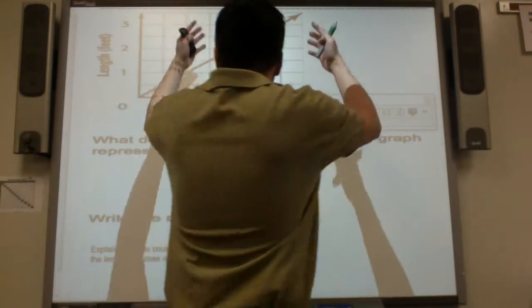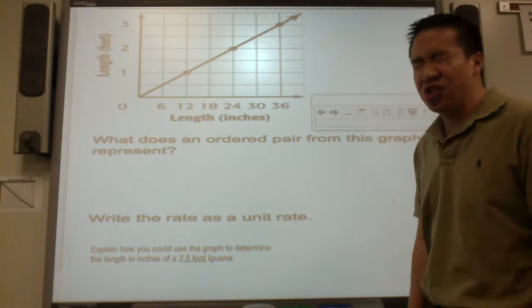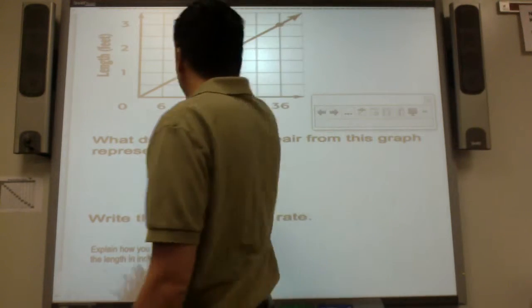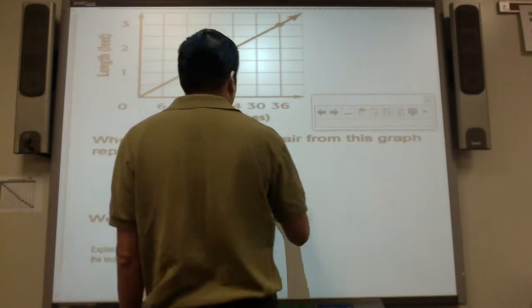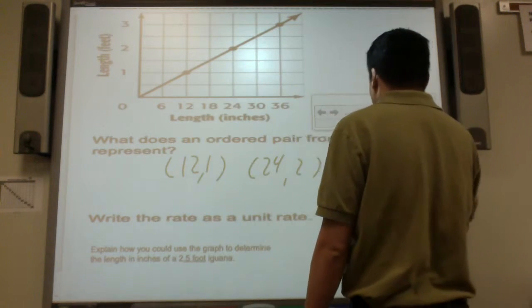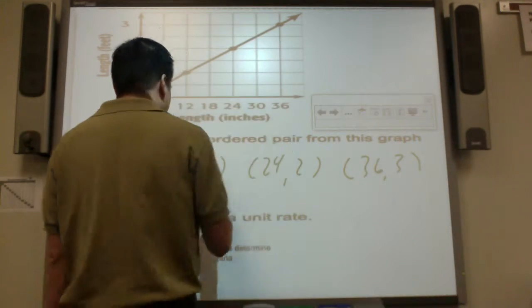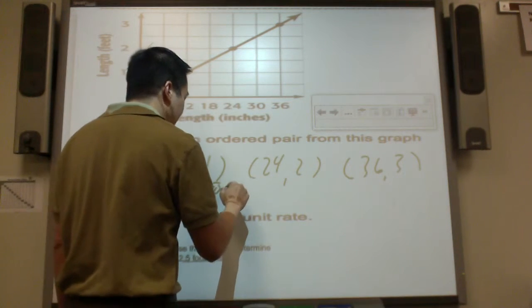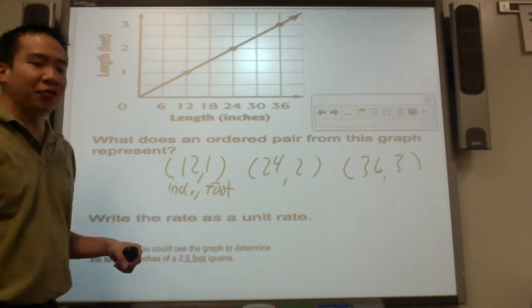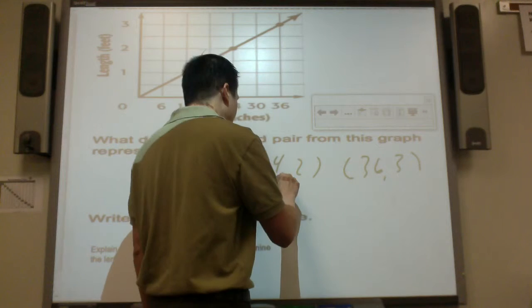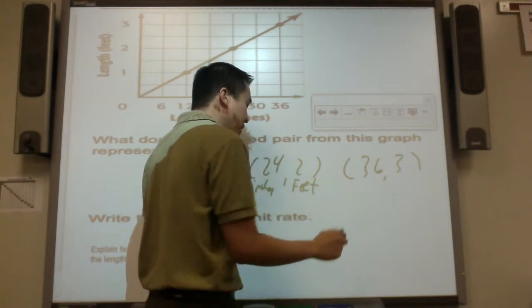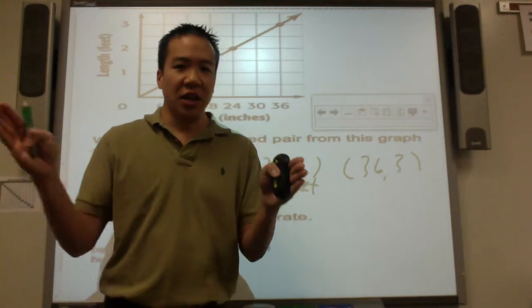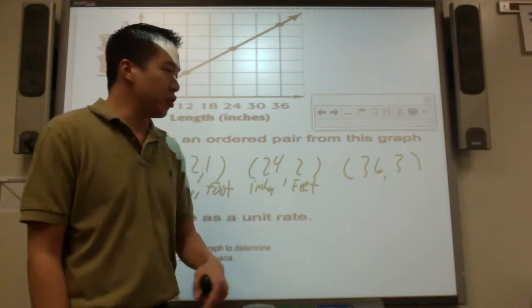This is a graph about length in inches and length in feet. What does an ordered pair from this graph represent? This represents (12,1), this represents (24,2), this represents (36,3). The x-axis is the number of inches, the y-axis is the number of feet. So 12 inches make a foot. Are there 24 inches in 2 feet? There are. Think of two rulers: one ruler is a foot at 12 inches. You have two rulers, 2 feet, 24 inches.